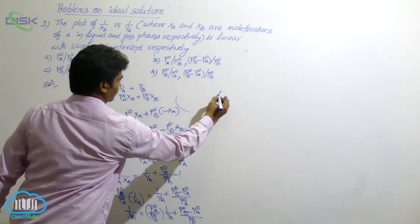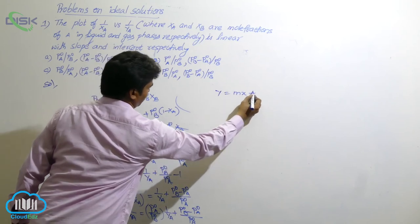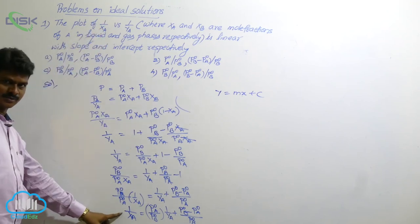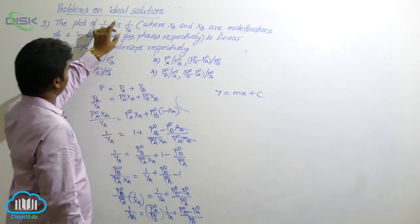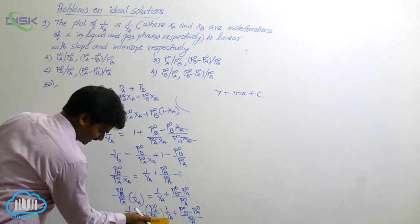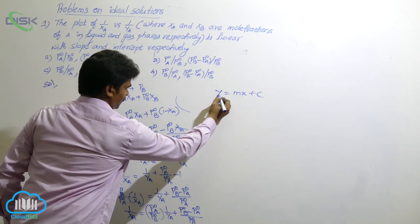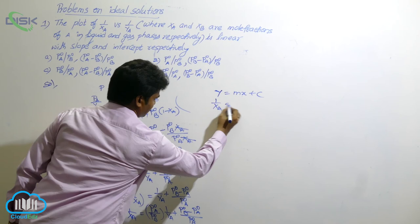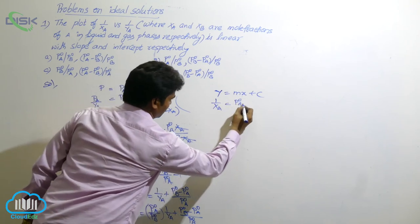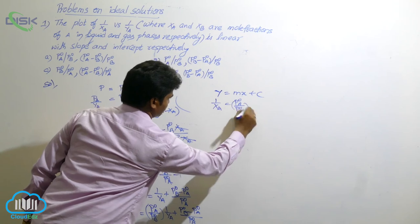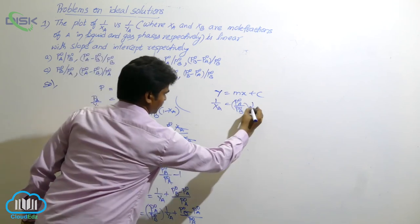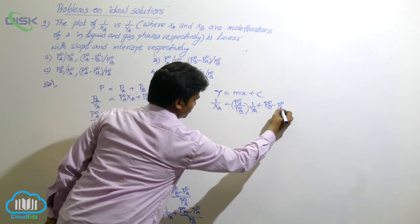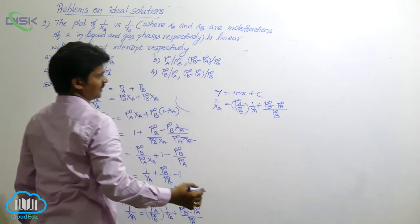This relation resembles Y equals MX plus C. Where Y is 1 by XA, where Y is 1 by XA. Similarly, where X is 1 by YA, this is X. So compare these two relations. In place of Y, 1 by XA. In place of slope, P naught A by P naught B. In place of X, 1 by YA. Plus in place of intercept, P naught B minus P naught A by P naught B. So what is intercept?